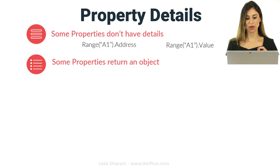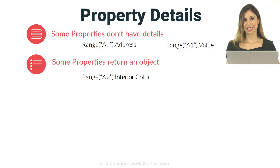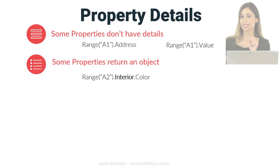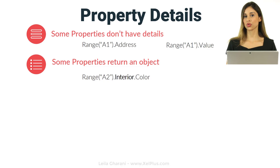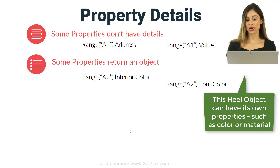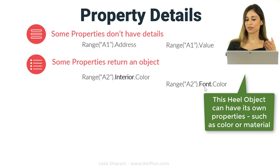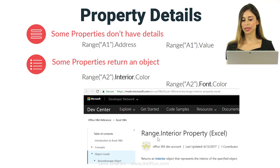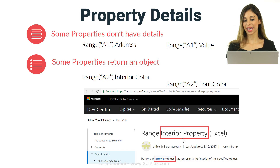What does it mean that properties return objects? Just think about the shoe. We had shoe.heel.material — the heel is a property of the shoe because shoes can have heels or no heels. But a heel is also an object. So it's kind of both. The same applies to range.interior.color or range.font.color — the color belongs to the font or interior. In Microsoft Help, you'll see that the interior property returns an interior object. If this confuses you, just think about the heel.